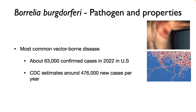The next pathogen in the pathogen parade is Borrelia burgdorferi. Borrelia burgdorferi is one of the most common vector-borne diseases. There are about 63,000 confirmed cases in 2022 in the United States, and the CDC estimates that about 476,000 new cases appear each year.